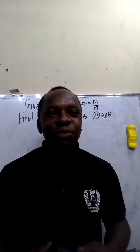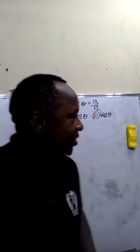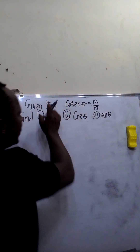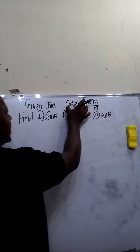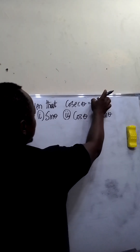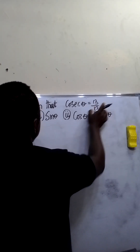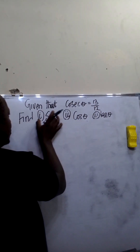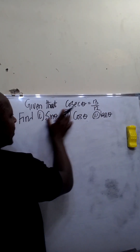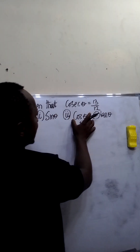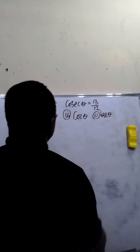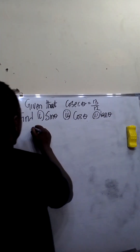Let's solve this trick question. Given that cosec theta is equal to 13 over 12, find: 1) sin theta, 2) cos theta, and 3) tan theta.